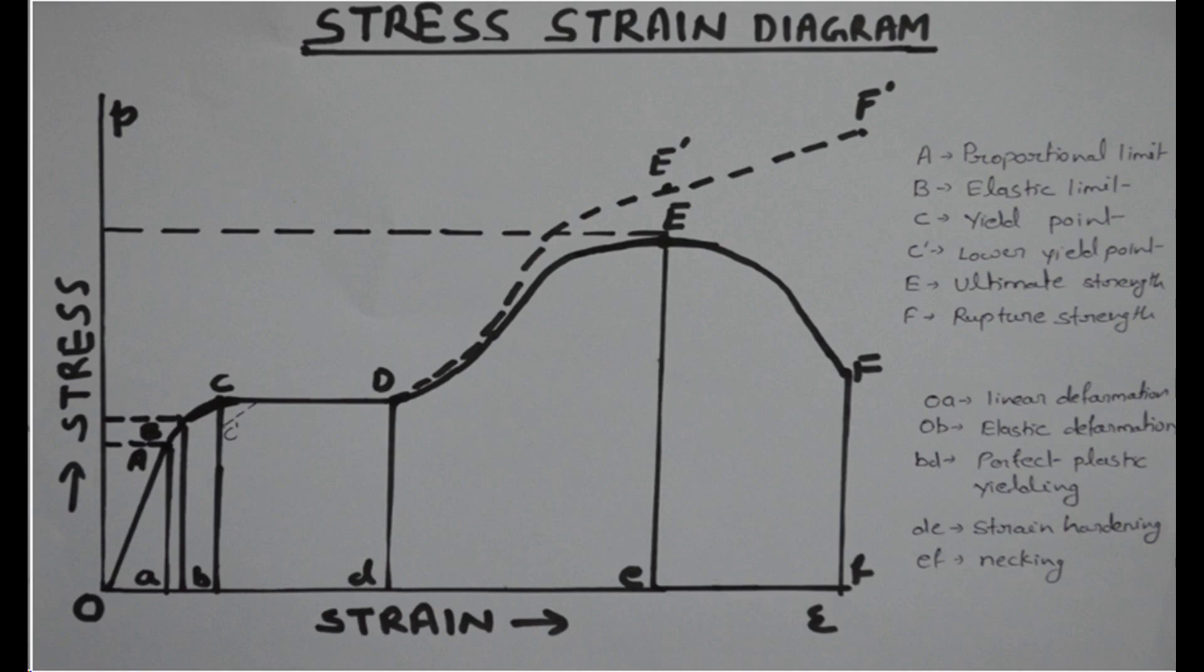This diagram begins with the straight line OA. You can see the line OA in which stress strain relationship is linear or the stress is directly proportional to strain. So point A mark as the limit of proportionality.